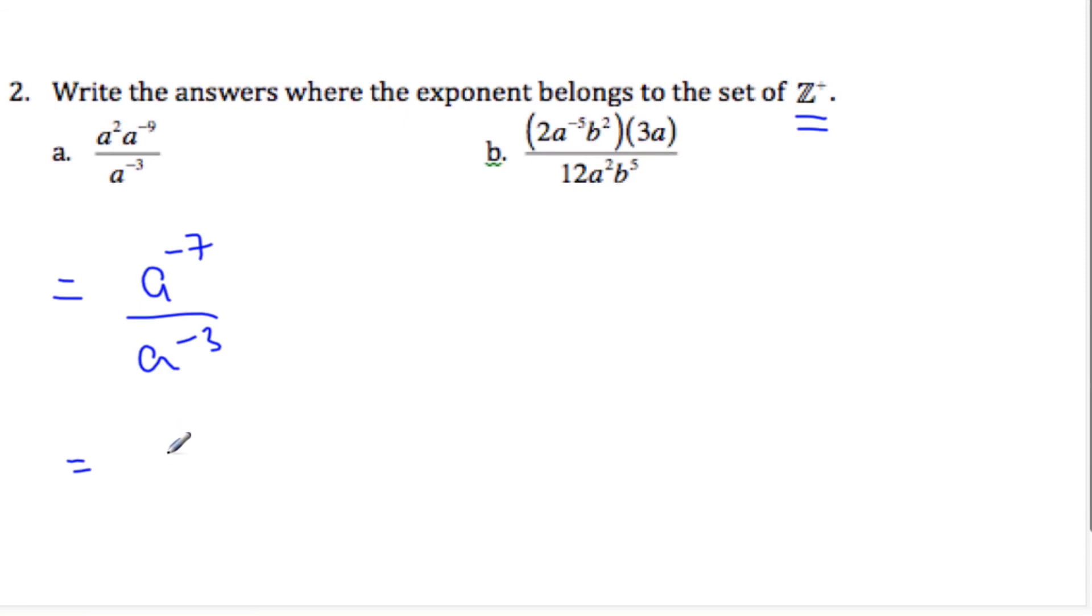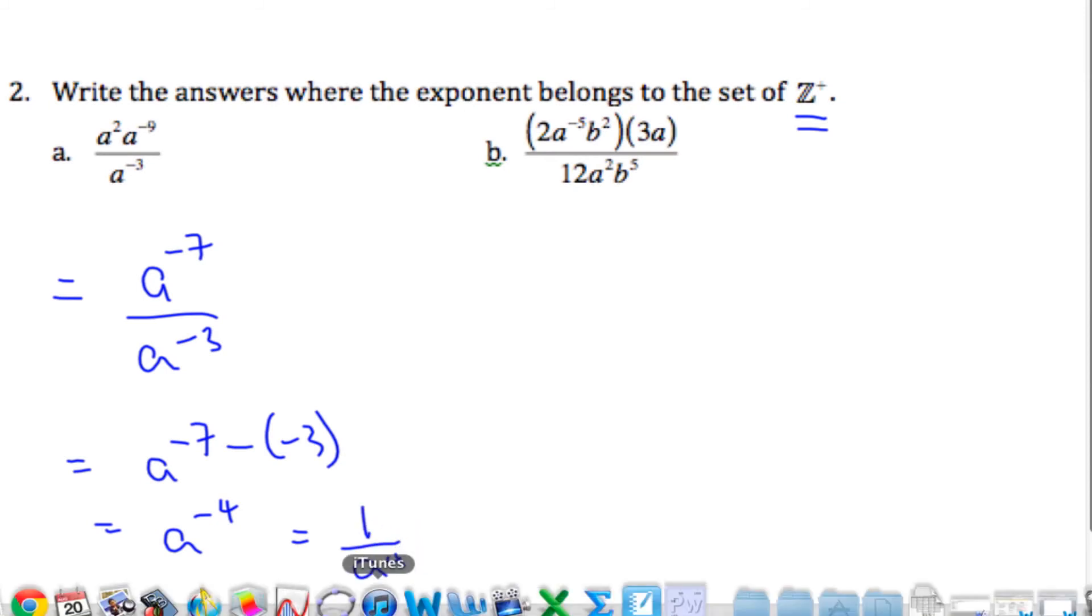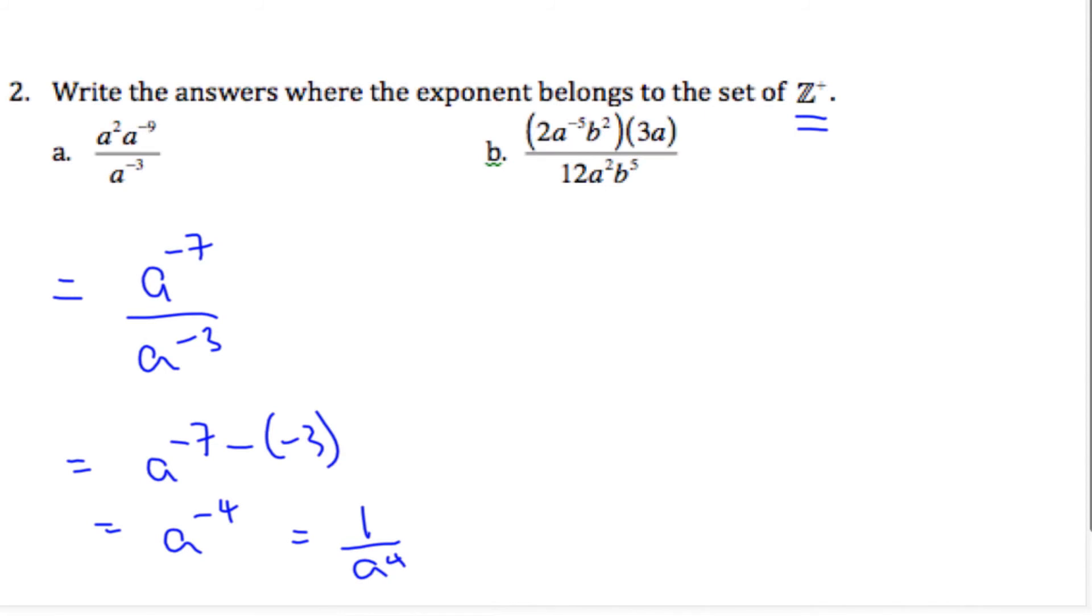Okay, now we need to take away because we're dividing, right? Right, so a to the negative 7 subtract negative 3, which is a to the 4. So we're going up 3 from negative 7. Which is then 1 over a to the 4th. Okay, and now I've got my exponent as a positive whole number. That's why we needed to put it on the bottom. Right.